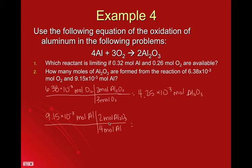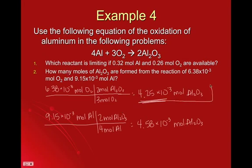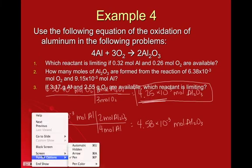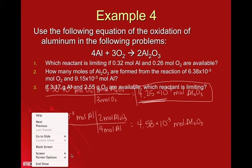And then for this one down here, 9.15 times 10 to the negative 3, times 2. Yeah, I could have reduced the 2 and the 4, but you know. And here I get 4.58 times 10 to the negative 3 moles Al2O3. Now all I have to do is look at these two numbers. Which one is lower? Well, 4.25 is less than 4.58. So bam, that one's lower, which means that the number of moles Al2O3 formed is this little guy right here. I don't know if I put a third question in here. I'm not sure yet.